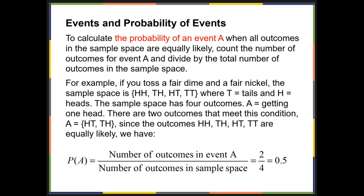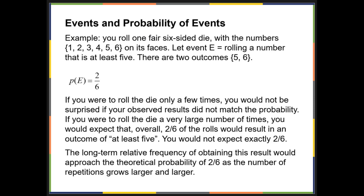Now if we look at rolling a six-sided die, let event E equal rolling a number that is at least five. So if we look at 1, 2, 3, 4, 5, and 6, we know that 5 and 6 are the two outcomes that are at least five. So then the probability of event E equals 2 over 6.